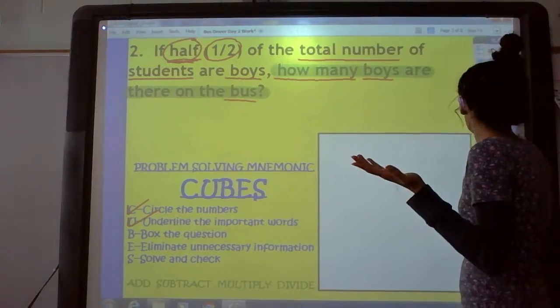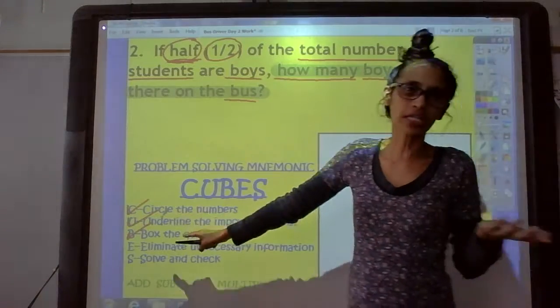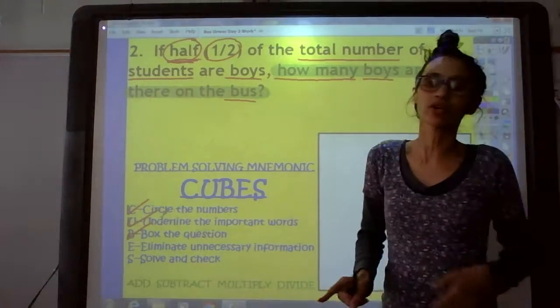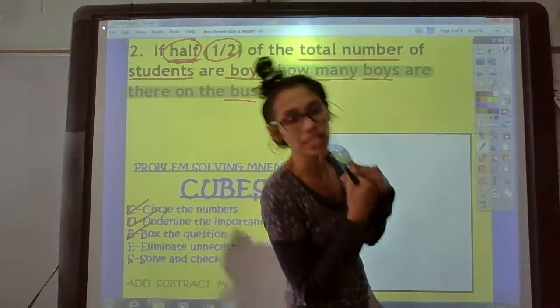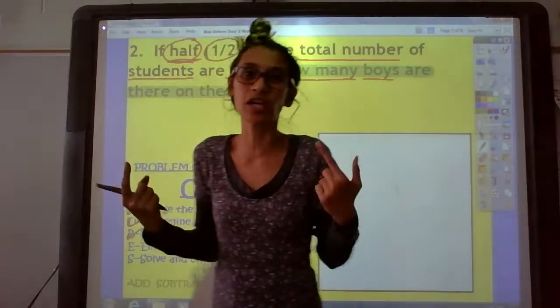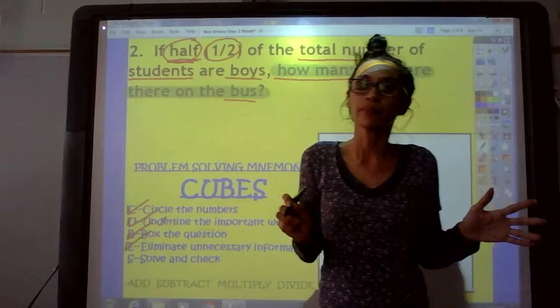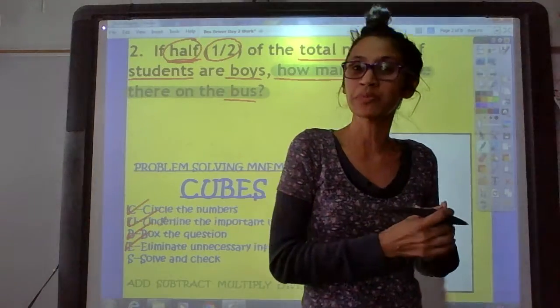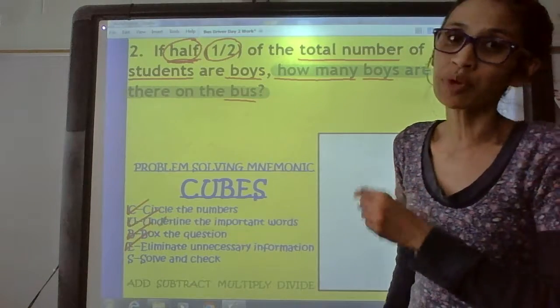So, we are done with the B step. Next is the E step. Eliminate unnecessary information. Is there anything in the problem that you see that is unnecessary? Nope. We need all that information. So, that was an easy step right there. And the last step in problem solving is to do what? Solve and check. So, to solve the problem, first thing we need to do is figure out what operation we need to do.